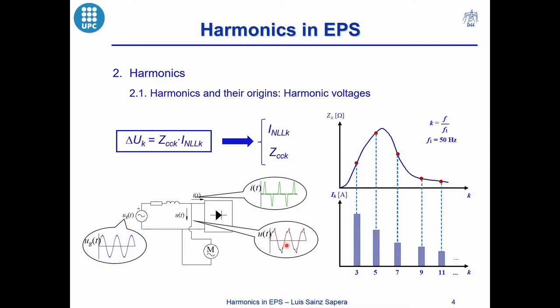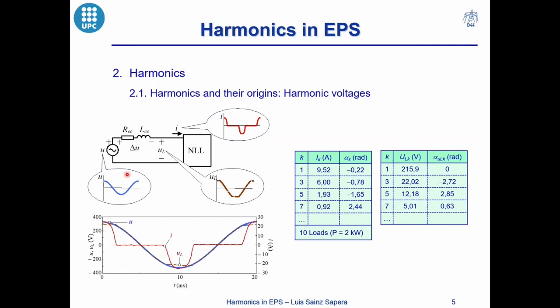In the next screen, there is an example of a sinusoidal supply voltage which feeds, through the impedance of the grid, 10 single-phase rectifiers of 2 kW each, consuming the non-sinusoidal current shown in the plot. The voltage at the nonlinear load terminals becomes non-sinusoidal due to the distorted currents consumed by the nonlinear load and the impedance of the grid. It can be seen that the load voltage has a flat zone matching with the peak of the current consumed by the single-phase rectifiers.